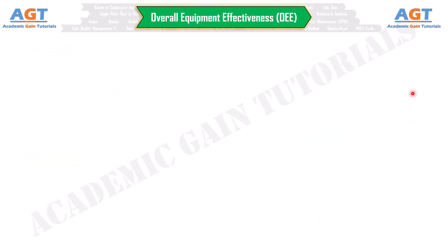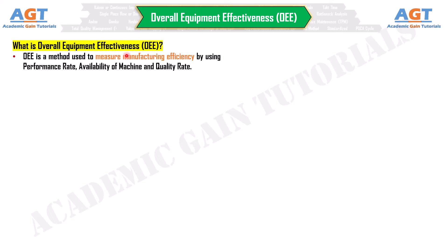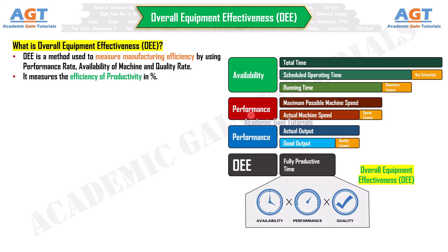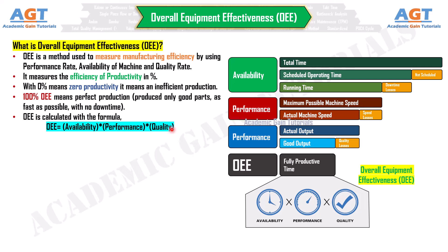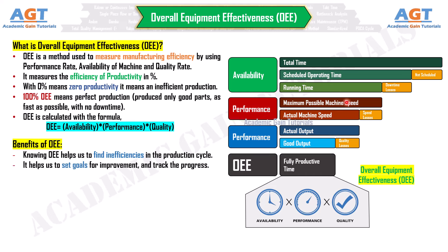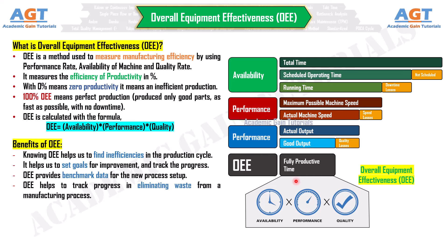Number 17: Overall Equipment Effectiveness (OEE). OEE is a method used to measure manufacturing efficiency using performance rate, availability of machine, and quality rate. It measures productivity efficiency in percent: 0% means zero productivity (inefficient production), while 100% OEE means perfect production — only good parts produced, as fast as possible, with no downtime. OEE is calculated as: OEE = Availability × Performance × Quality. Benefits: Knowing OEE helps find inefficiencies in the production cycle, set improvement goals, track progress, provide benchmark data for new process setup, and track progress in eliminating waste.